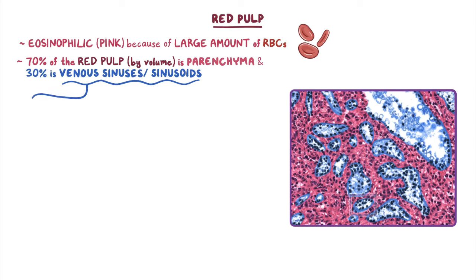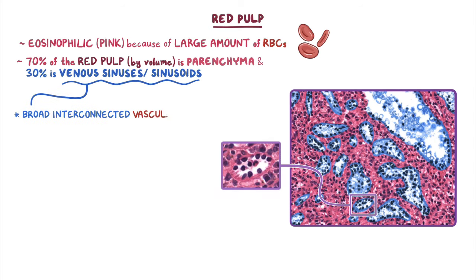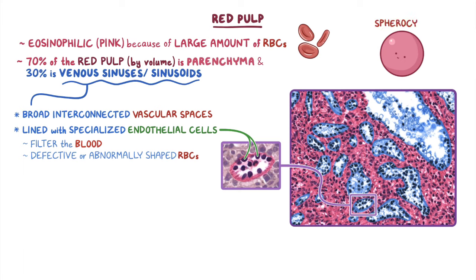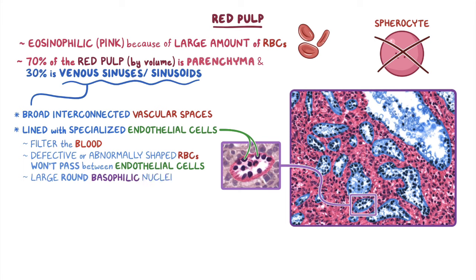The venous sinuses are broad interconnected vascular spaces that are lined with specialized endothelial cells that filter the blood. Defective or abnormally shaped RBCs, such as spherocytes, won't be able to pass between the endothelial cells, and they'll eventually be removed by nearby macrophages. The endothelial cells have large round basophilic nuclei, and have reticular or net-like fibers that surround the sinusoids to provide structural support, although they can't be seen with light microscopy alone.